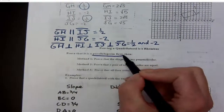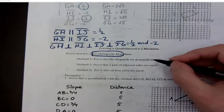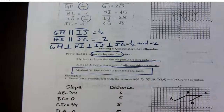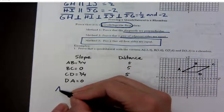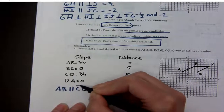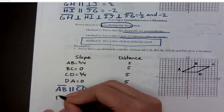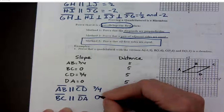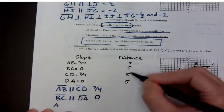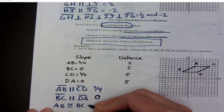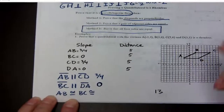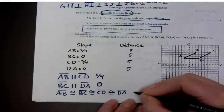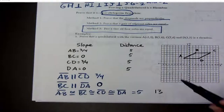For a rhombus, we also start with a parallelogram statement. We show which sides are parallel, then prove all four sides are equal. So AB is parallel to CD — both are three-fourths — and BC is parallel to DA — both are 0. Then for distance, we see all sides are the same: AB is congruent to BC is congruent to CD is congruent to DA. That is the proof for a rhombus.